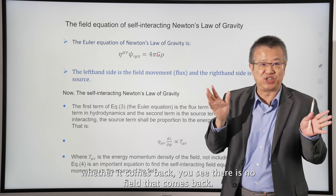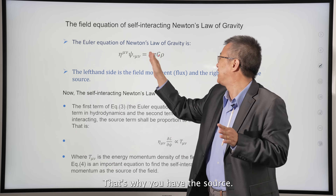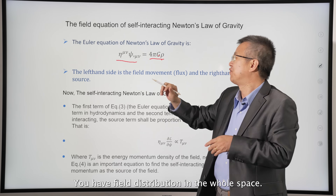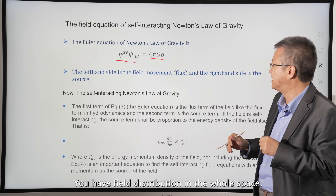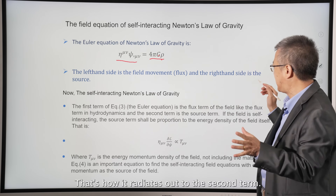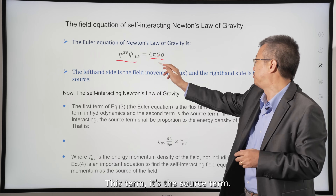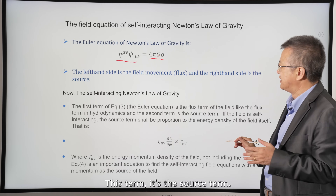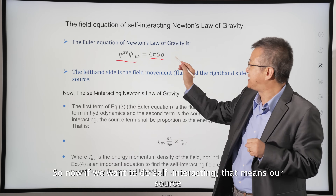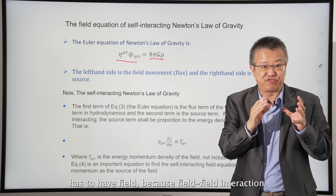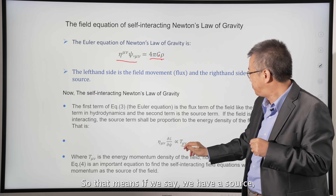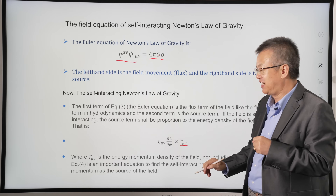There's no field coming back — that's why you have a source term and a field distribution over all of space. The first term is a flux term — that's how the field radiates out. The second term is the source term. Now if we want to do self-interacting, the source has to include the field, because it's a field-field interaction. So we need a source that is the field itself.